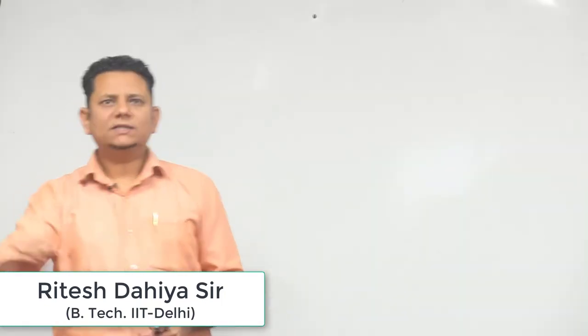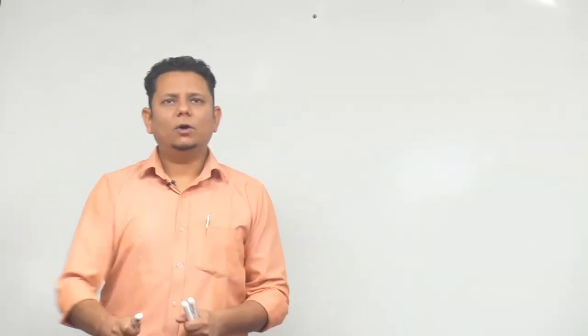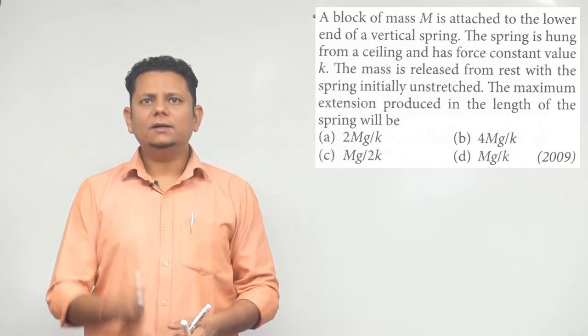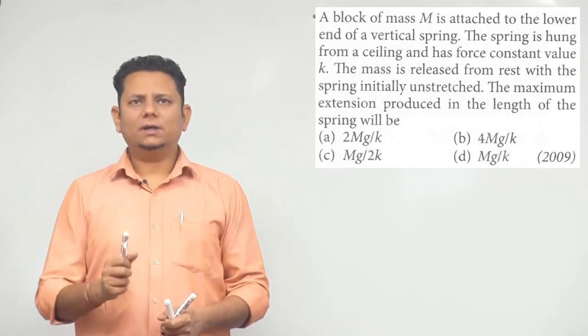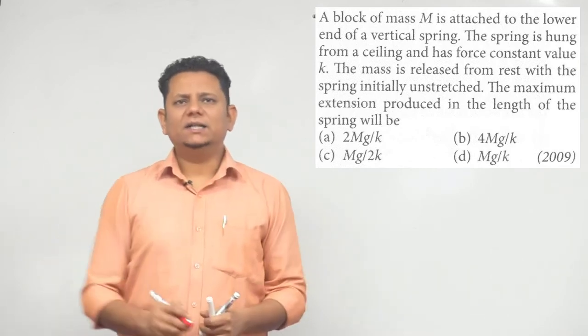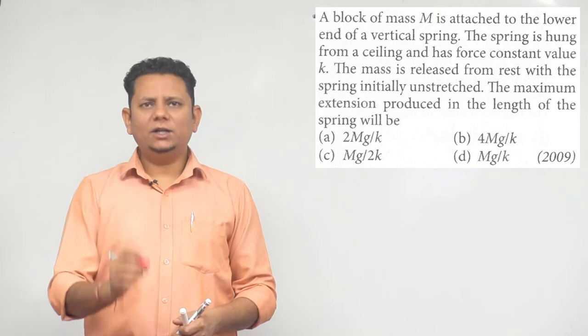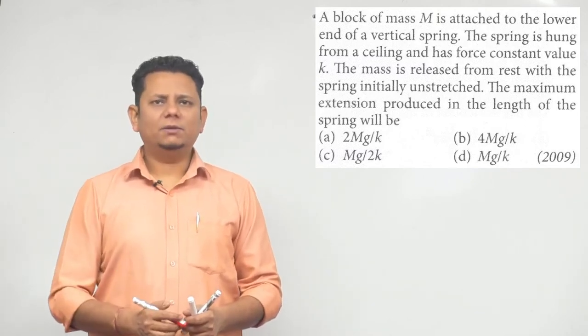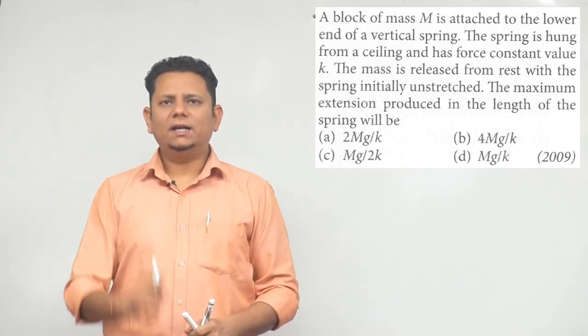Next question, 2009 question says: a block of mass M is attached to the lower end of a vertical spring. The spring is hung from a ceiling and has force constant value of k. The mass is released from rest with the spring initially unstretched. The maximum extension produced in length of the spring will be. Again, interesting question.